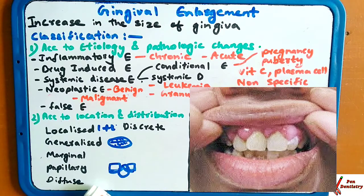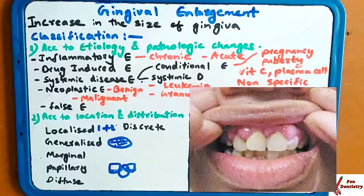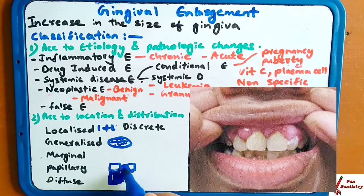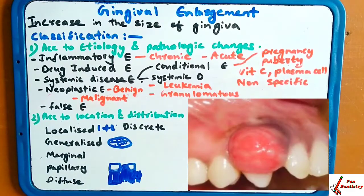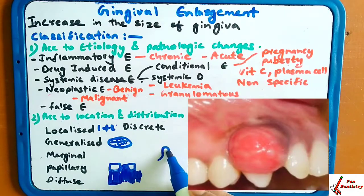Diffuse enlargement involves all parts of the gingiva — that is, marginal, attached, and interdental. In diffuse enlargement, every attached gingiva as well as the papillary area will be enlarged. The discrete type is an isolated, sessile or pediculated tumor-like structure, where the gingiva forms and enlarges in a localized tumor-like manner.